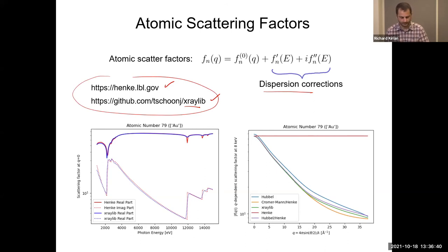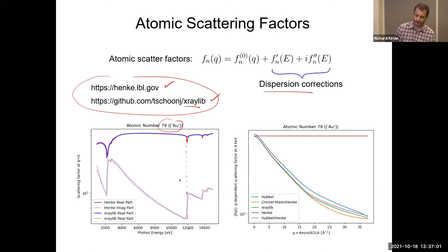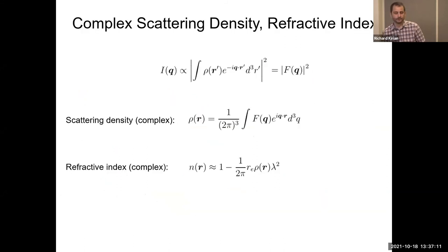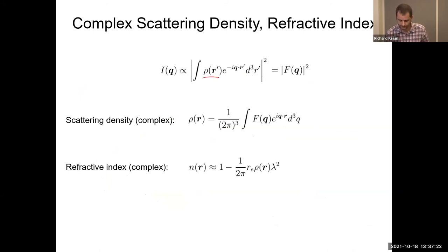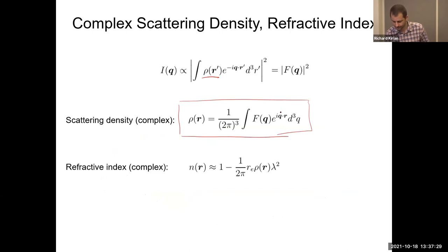The scattering factors are important — there will be talks later on phase retrieval using anomalous dispersion, and these are the dispersion corrections. You can look them up in the Henke tables, or use the xraylib Python library. The plots shown here are from the reborn Python package my group uses, which wraps these two packages. If you need help looking these up programmatically in Python, we may have code to help. Shown here are the q-dependent form factors and the energy-dependent dispersion corrections with various resonances, corresponding to photo-ionization cross sections — this appears to be for gold.